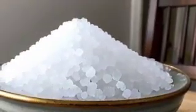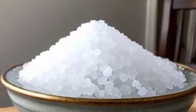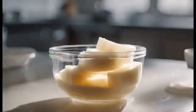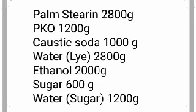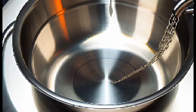Alternatively, we'll show how you can use palm stearin instead of stearic acid, since stearic acid adds cost. The recipe quantities are: palm stearin at 2800g, PKO at 1200g, caustic soda at 1000g, water for the caustic soda at 2800g, ethanol at 2000g, sugar at 600g, and water for the sugar at 1200g.